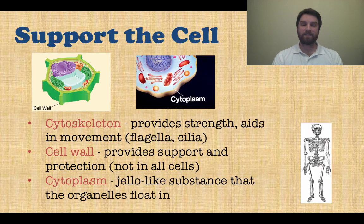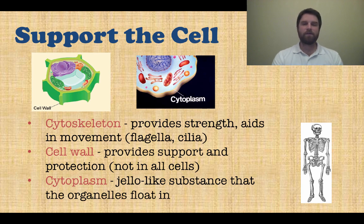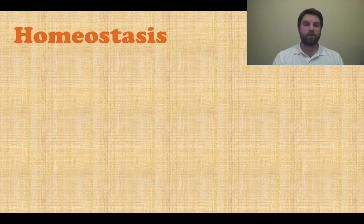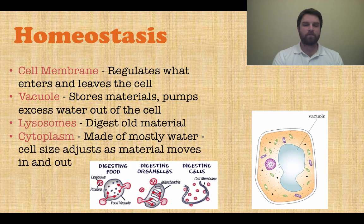For supporting the cell, we have the cytoskeleton, which provides strength and aids in movement. Something like a flagella — a tail that helps the cell move — or cilia, which are tiny hairs all around the cell that beat back and forth so it can move. Next we have a cell wall, which provides support and protection, but it's not in all types of cells; you'll find cell walls more commonly in plant cells. Next is cytoplasm, the jello-like substance that the organelles float in within the cell, and it serves another function as well — which we'll see as we move into homeostasis.